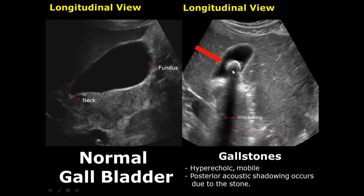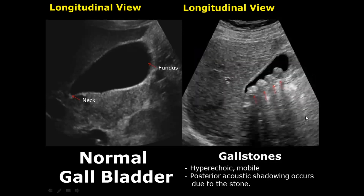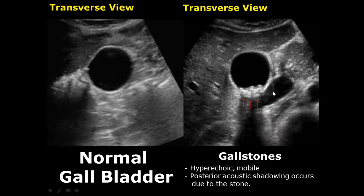Gallstones appear as hyperechoic structures inside the gallbladder and they will produce posterior shadowing. In this image there are four gallstones, each one producing its own shadow posteriorly. This image shows three gallstones also producing posterior shadowing.